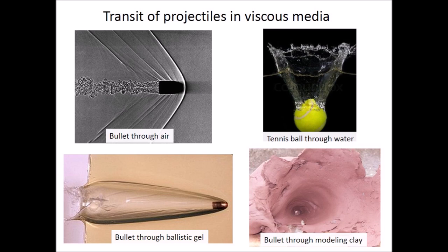In contrast to the impact of projectiles on hard ground, the transit of a projectile at ballistic speed through a viscous medium does not create the great pressures and material transitions that characterize extraterrestrial impacts. Passage through a viscous medium produces heat and displaces material, dissipating the kinetic energy and slowing the projectile. A tennis ball dropped in water creates a conical cavity and displaces an ejecta curtain. The conical cavity collapses when water rushes to fill the crater, initiating an oscillation that produces expanding circular ripples.